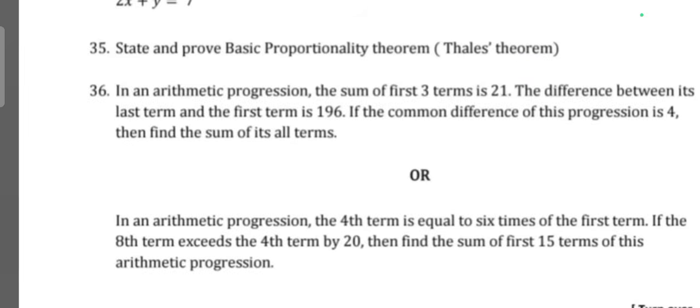Or question 36: In an arithmetic progression, the fourth term is equal to six times its first term. If the eighth term exceeds the fourth term by 20, then find the sum of the first 15 terms of the arithmetic progression.